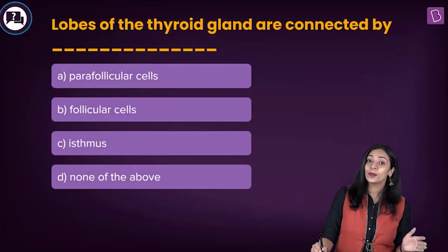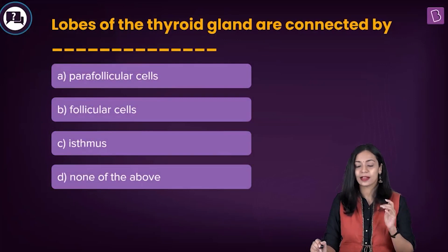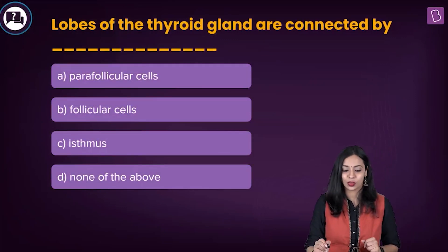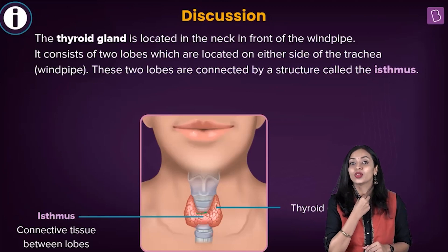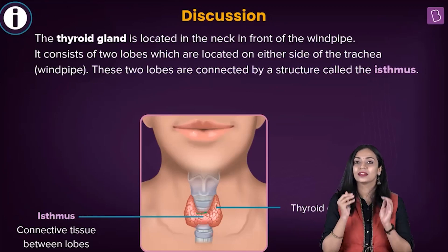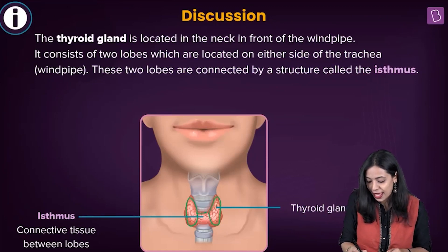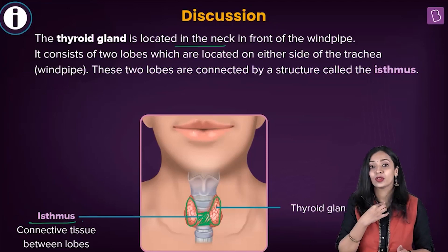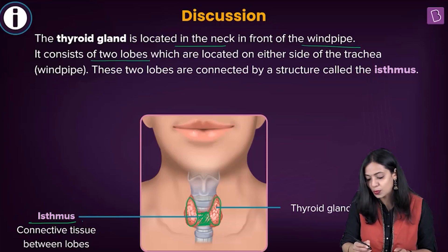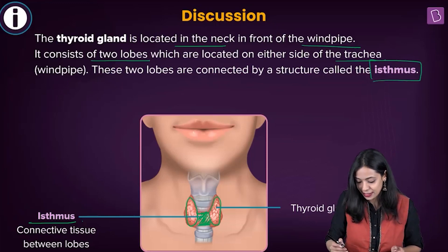Here's the next question: the lobes of the thyroid gland are connected by what? The options are parafollicular cells, follicular cells, isthmus, and none of the above. The thyroid gland is located just below the larynx on top of the windpipe, also known as the trachea. The thyroid gland is butterfly shaped with two wing-like lobes located on either side of the trachea, connected by a central structure called the isthmus.